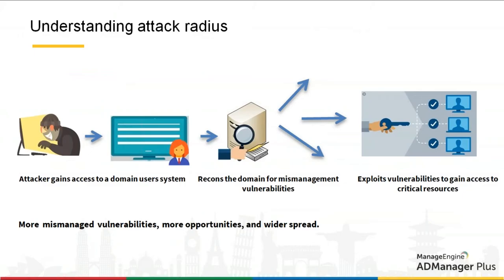This is the attack radius. An attacker gains access to an end-user system, and once that happens, the next immediate step is to perform reconnaissance — surveying and analyzing the domain or forest for any mismanagement vulnerabilities. Once a mismanagement vulnerability is found, it is exploited to gain access to critical resources such as servers with sensitive data or privileged users with confidential data. More mismanagement vulnerabilities give more opportunities to attackers and can aid in the fastest spread of a breach.